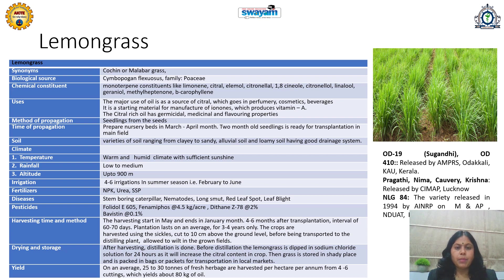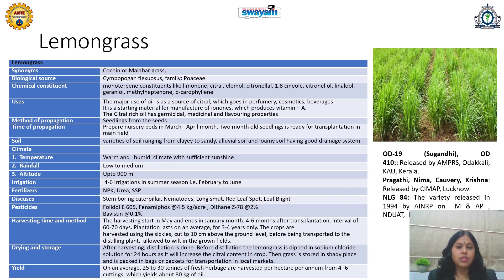Diseases include stem boring, caterpillar, nematodes, leaf scorch, red leaf spot, and leaf blight. Suggested pesticides: Bavistin, Dithane, etc. Also, plant-based pesticides like neem, pyrethrum, or essential oil sprays can be used. Harvesting starts in May and ends in January — 4 to 6 months after transplantation, at intervals of 60 to 70 days.